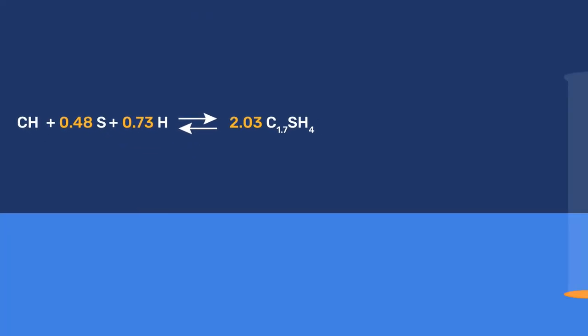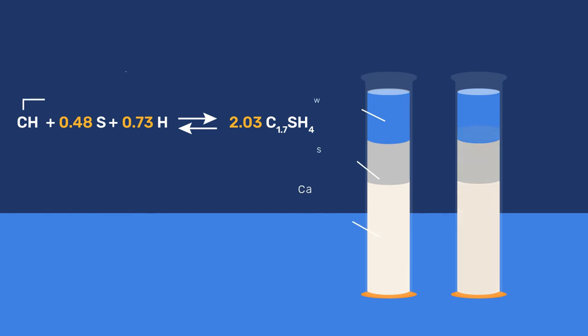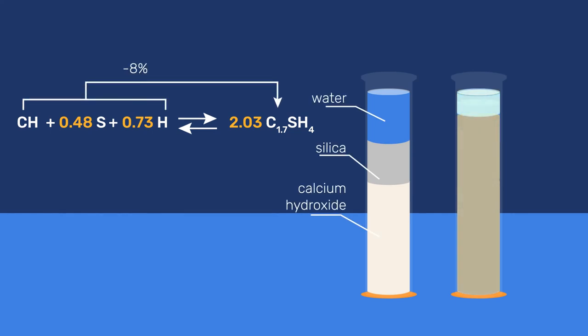A first observation is that the total volume decreases by 8% from a total of 2.21 to 2.03. This corresponds to chemical shrinkage and mainly results in porosity within the hardened material.